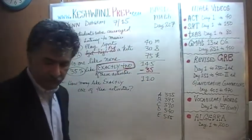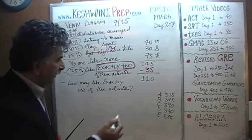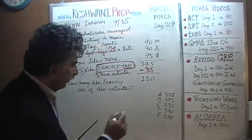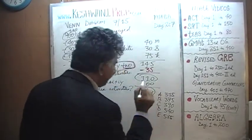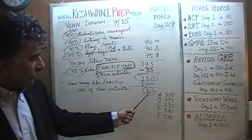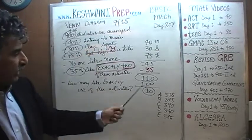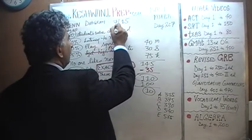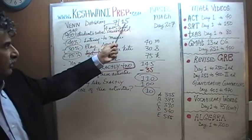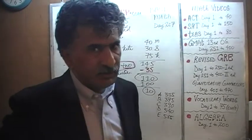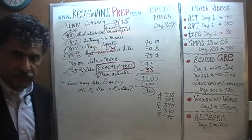But we still have a discrepancy: we started with 100 people but ended up with 110 — a difference of 10. This tells us that 5 people were counted as 15 people, because those 5 were triple-counted — once as people who like music, once as people who like sports, and once as people who like to fly a kite. Since 5 appeared as 15, we have a discrepancy of 10.